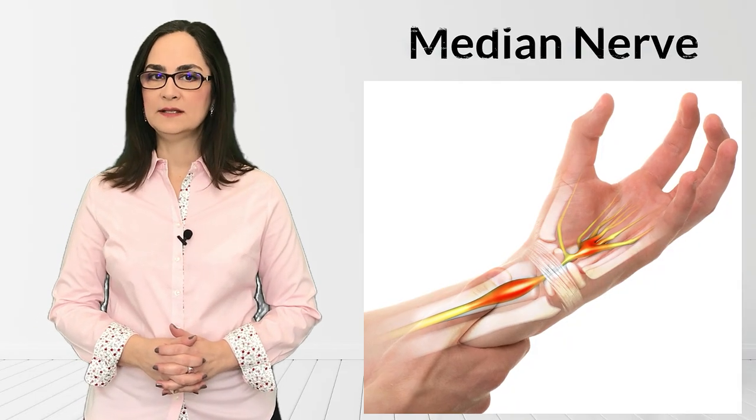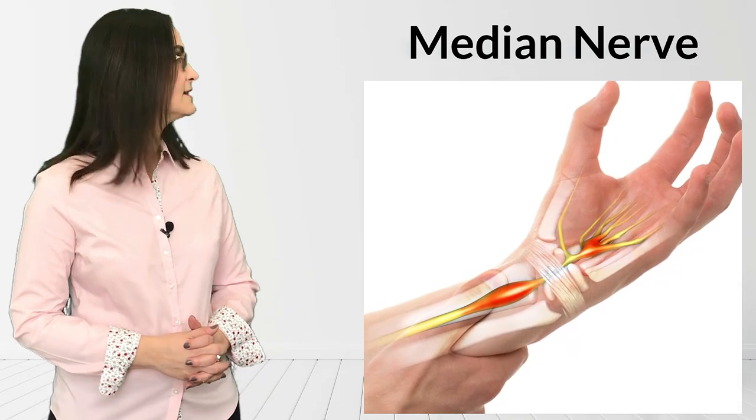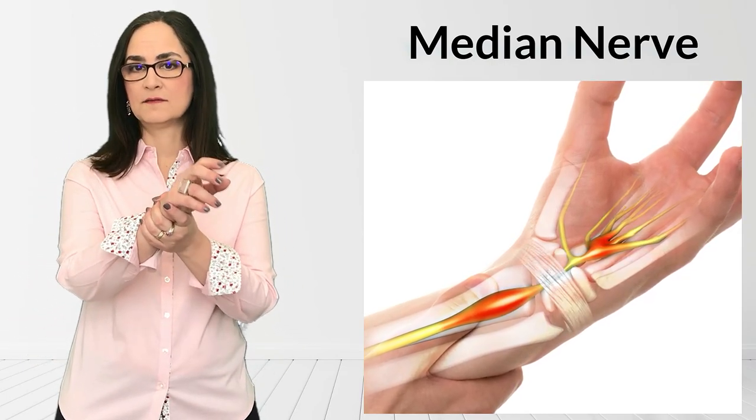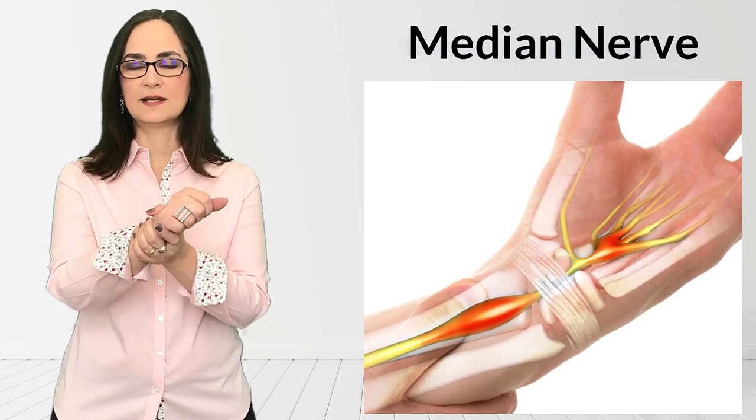There is a nerve called the median nerve that passes inside the wrist. The wrist contains this thick band like a very strong bracelet to protect the structures inside it.